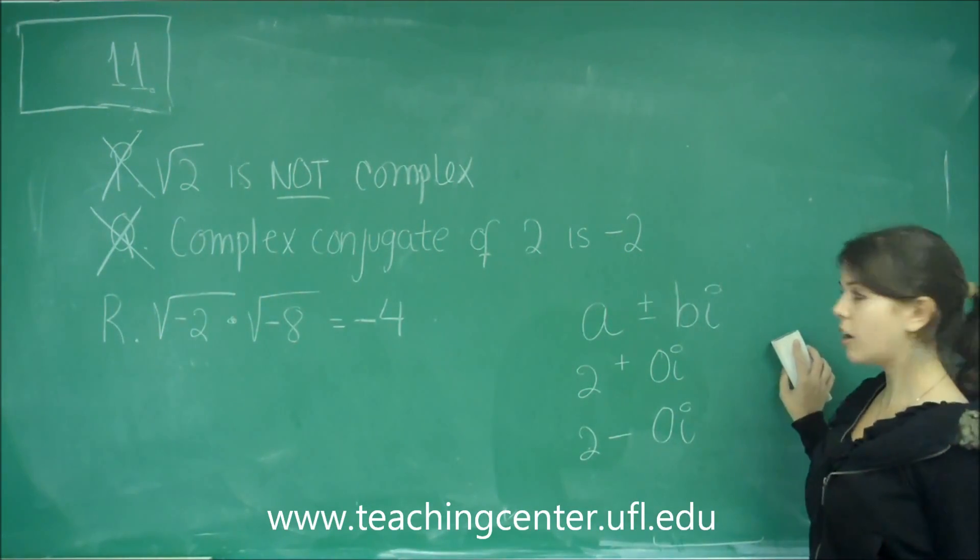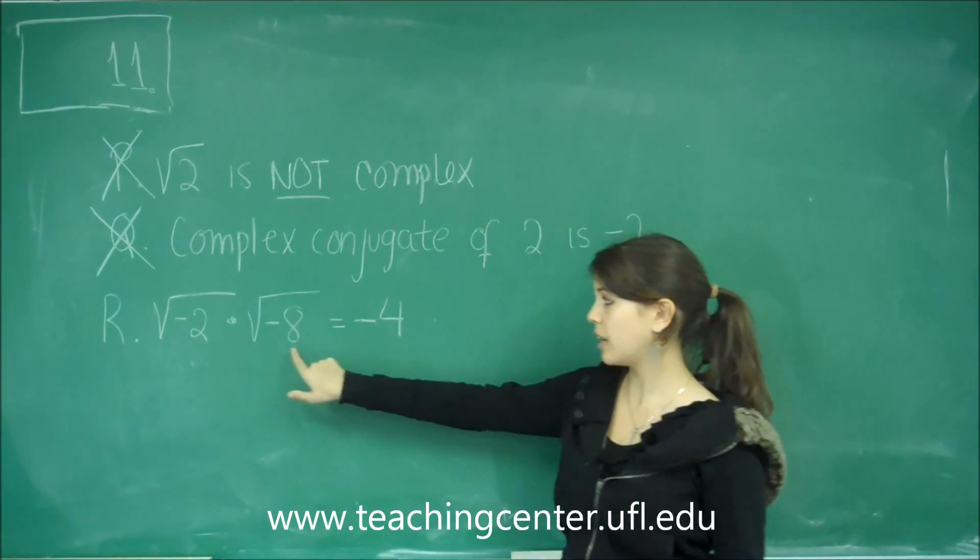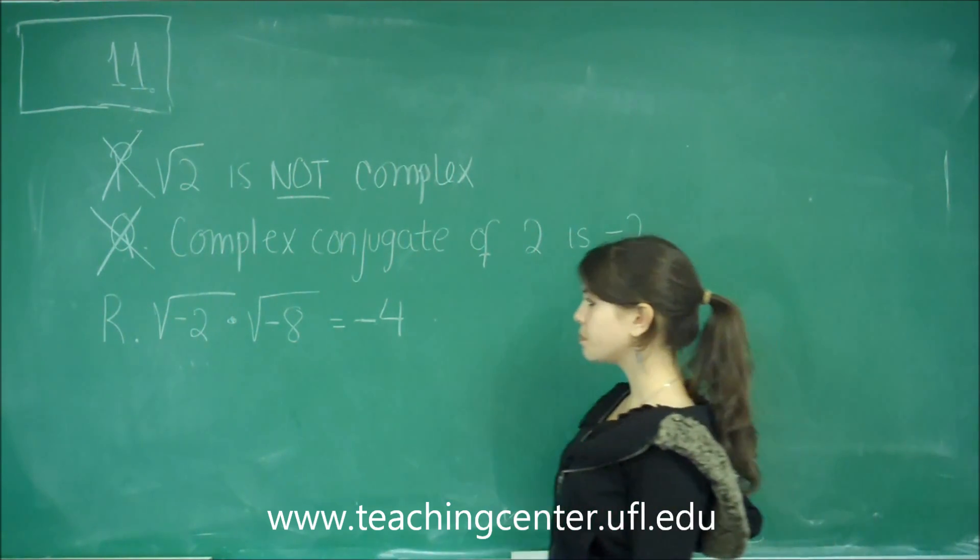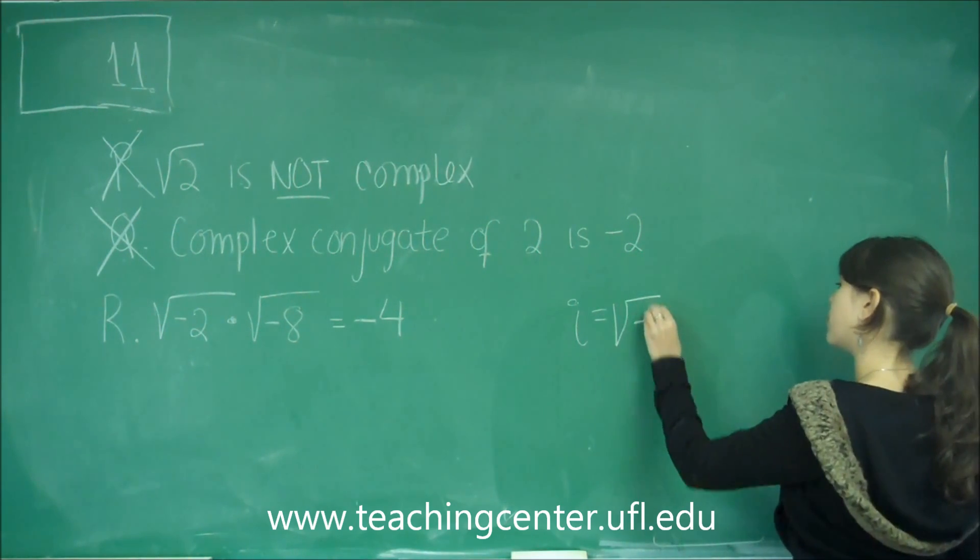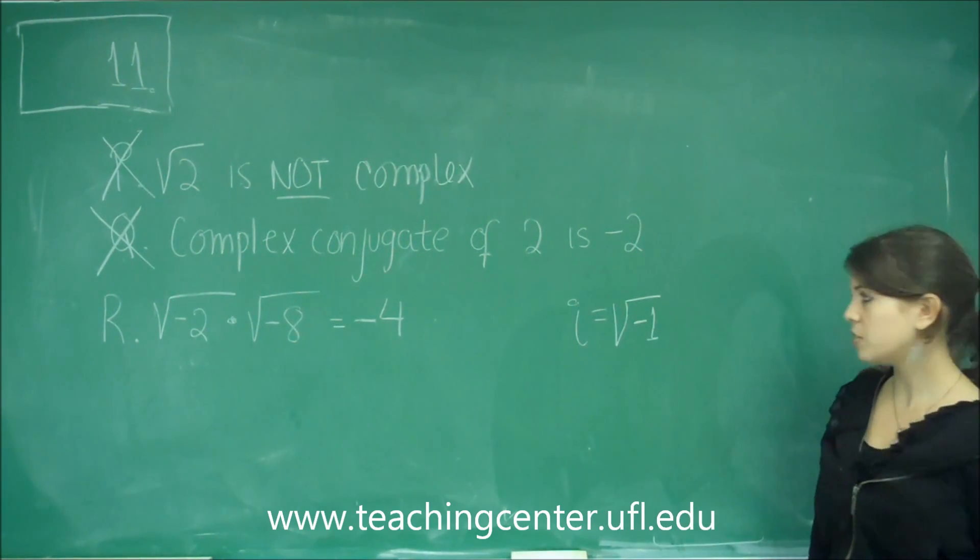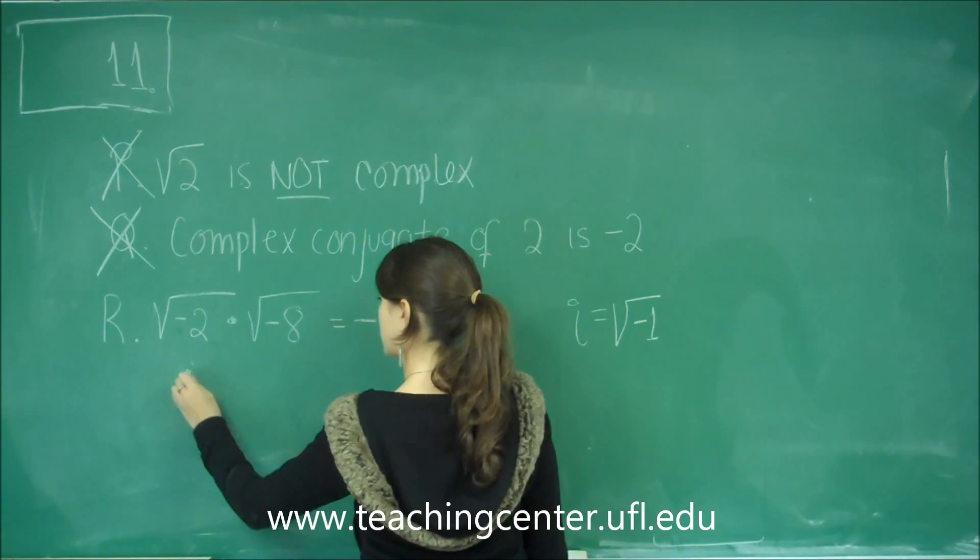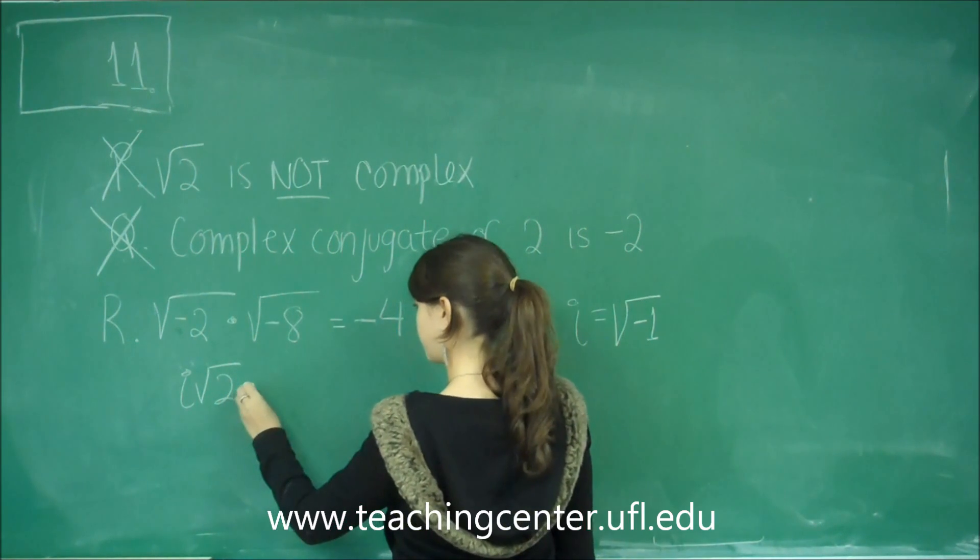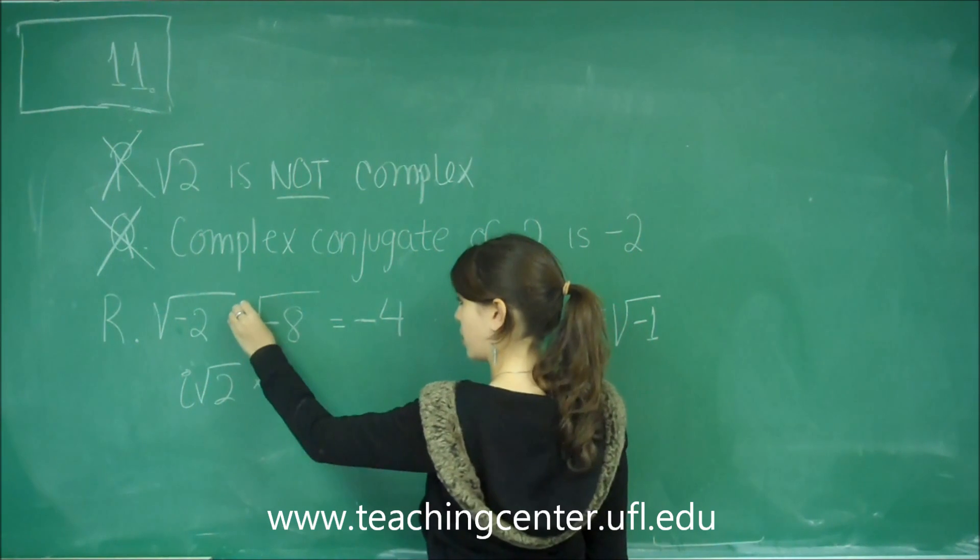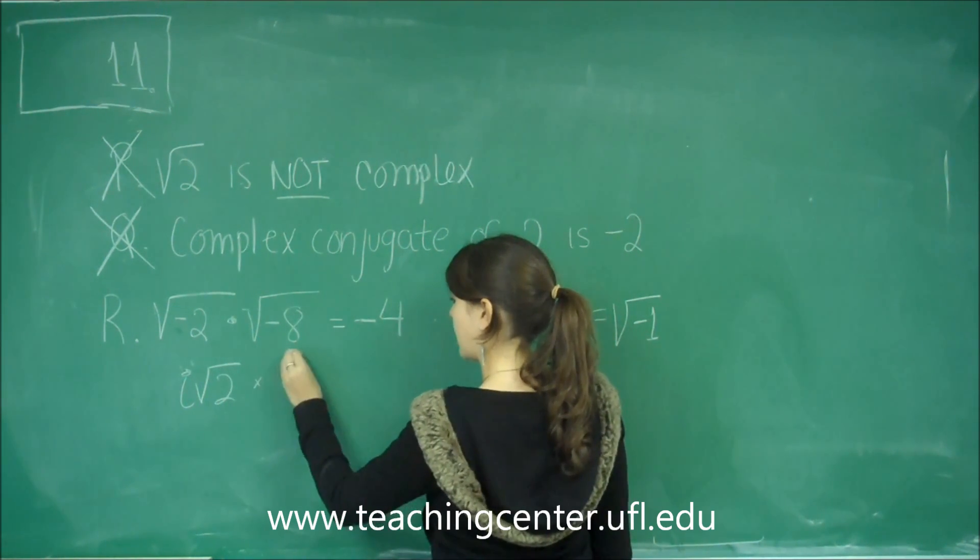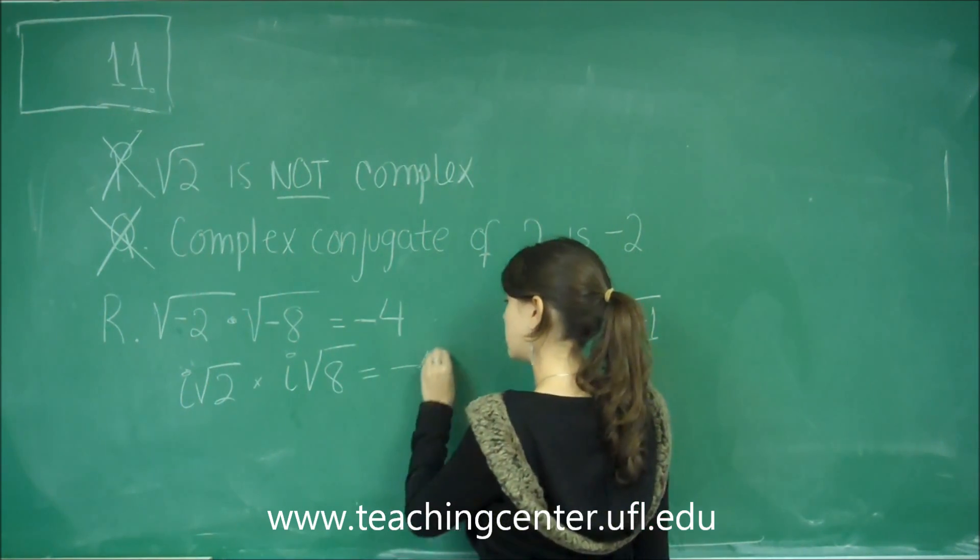And part R says, the square root of negative 2 times the square root of negative 8 is negative 4. So, remember the definition of I is square root of negative 1. We're going to use that here. We're going to take out a negative 1 from here and say this is I times square root of 2 times, take out a negative 1 from here, a square root of negative 1, and say this is I times square root of 8 equals negative 4.